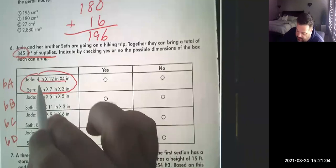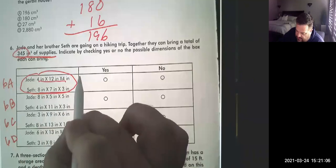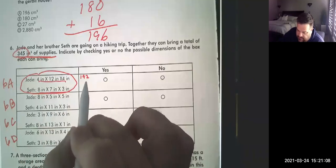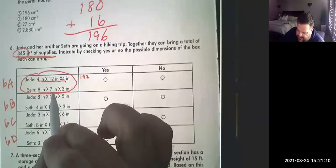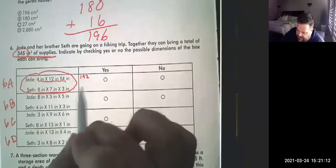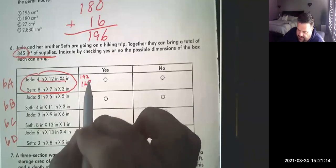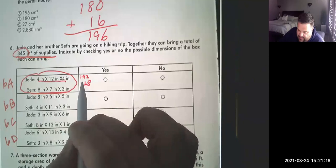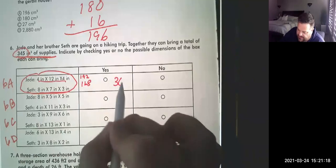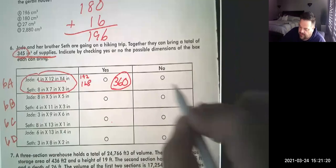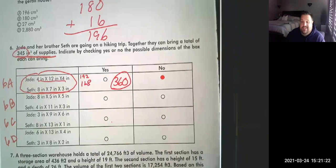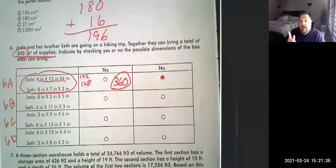So you just have to basically calculate both of these and see whether it would fit into the 345. So 4 times 12 times 4 is 192, 8 times 7 times 3 is 168. And if we add that all up we get 360. So in this one, the answer would be no because they have too much stuff. So if you were confused on how to do this problem, pause again and try to do 6B, 6C, and 6D on your own.